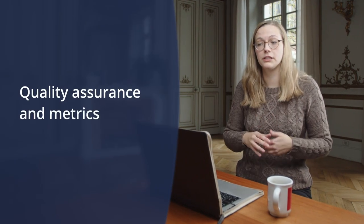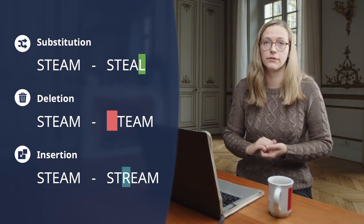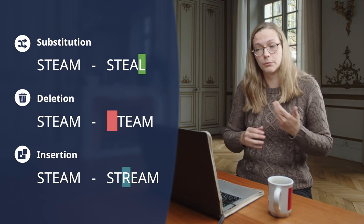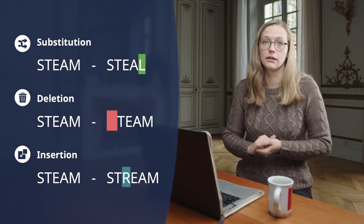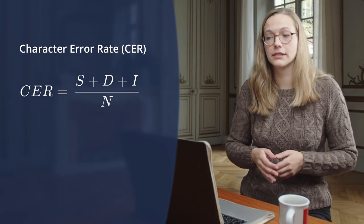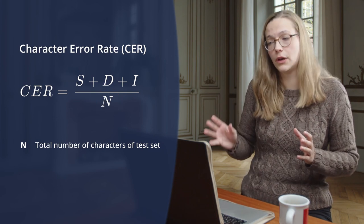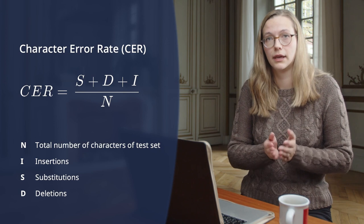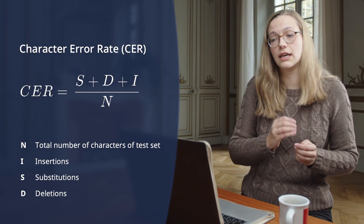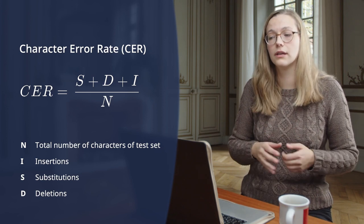When the model has produced a transcription, you will have to check its performance. This is the fifth step: quality assurance and metrics. In the ATR transcription, several types of error can occur, such as the addition of a sign, the deletion of a sign, and the replacement of a sign by another. The performance of a model in predicting a text is evaluated by different types of scores. The most common are accuracy and character error rates. The character error rate, in short CER, compares the total number of characters of the test set, including spaces, to the sum of the number of insertions, substitutions, and deletions of characters required to obtain the ground truth result. Each minor transcription error counts — every missing comma, additional space, or even an uppercase letter instead of a lowercase letter is included in the CER as an error.